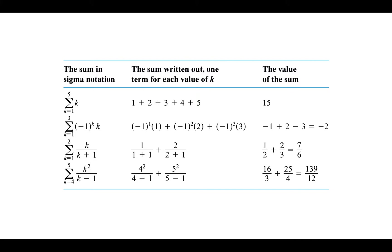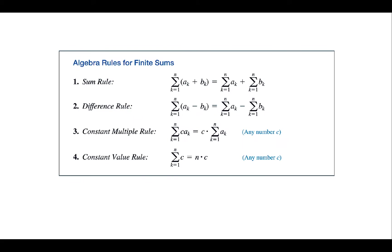Some examples: the first one has k equal 1 to 5 where a_k is k itself, so we plug in k equal 1, 2, 3, 4, 5 and add them — the sum is 15. The second example has k going to 3, giving three terms of negative 1 to the power k; adding them gives negative 2. For the third and fourth examples, wherever you see k you replace it by the appropriate values — giving sums of 7/6 and 5, respectively.